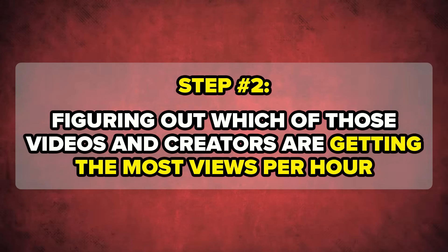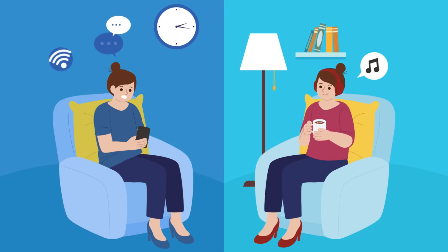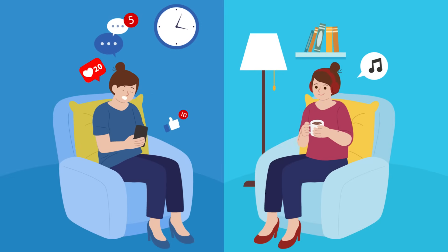Step two is to go through all those different channels and searches and figure out exactly what videos are getting the most views per hour. You want to come up with a list of five video topics getting the most views per hour, because this means it's the type of content your audience is interested in right now — not two years ago, not a year ago. This will help you understand the psychology behind what's getting them to click, what formats work, what titles to use, and what topics to cover.